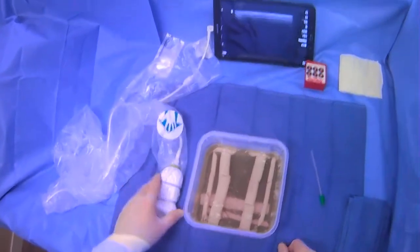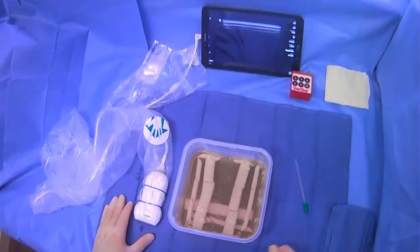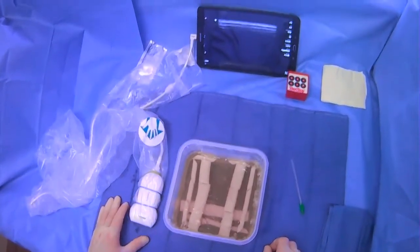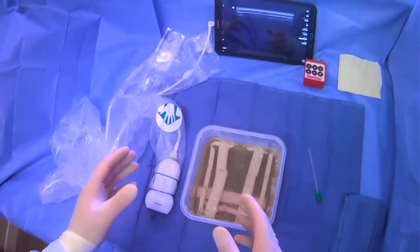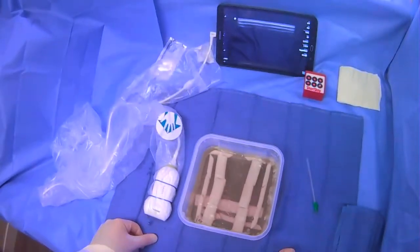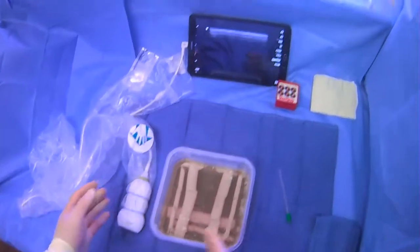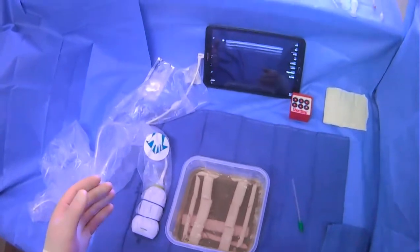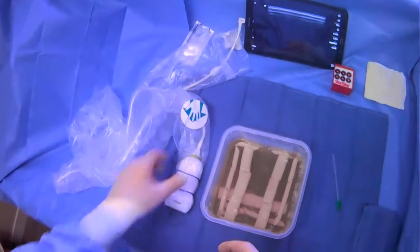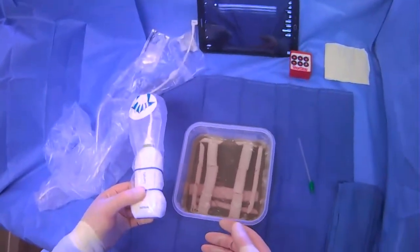I want to go over how to hold the ultrasound probe when you're going to be doing a case which requires you to get IJ access, access into the internal jugular vein. This probe holding is going to be for the gaining of access into the IJ. So it's a simple thing to gain access if you know what you're doing. However, oftentimes people can get tripped up at the start of the case when they're holding the probe in a way that doesn't really set them up for success. So that's why we're going to spend a little bit of time to talk about this. It seems simple, but it does set the tone for the rest of the case.